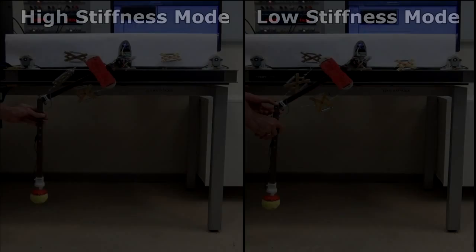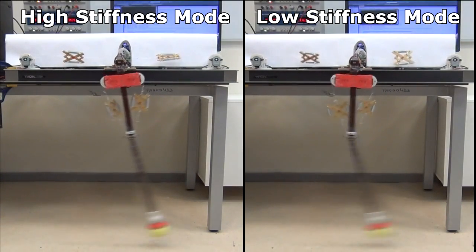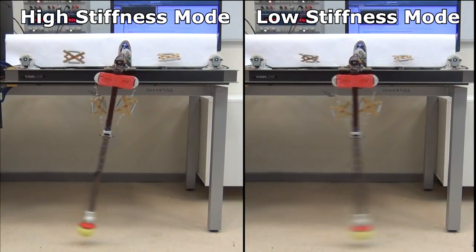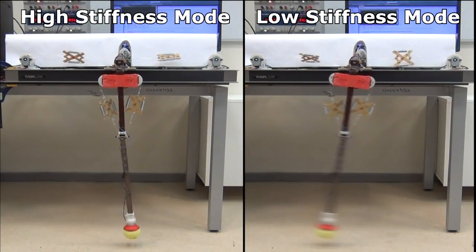Intrinsically compliant variable stiffness actuated robots can store energy in the elastic elements and modulate joint compliance.